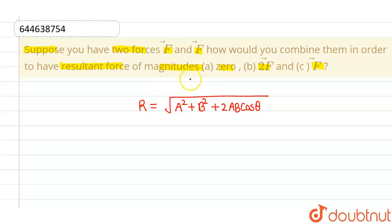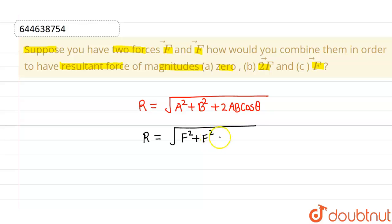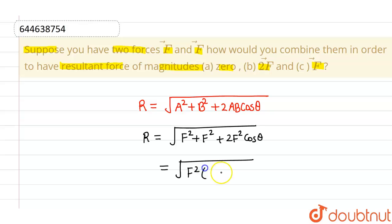Now when the two forces are the same, that is to say their magnitude is the same, then the resultant comes out to be root over (f² + f² + 2f² cosθ), which can be written as root over 2f²(1 + cosθ). This will be the resultant.